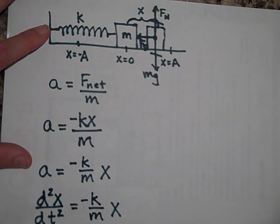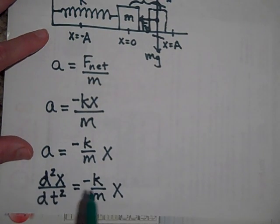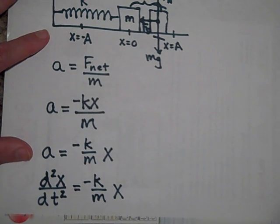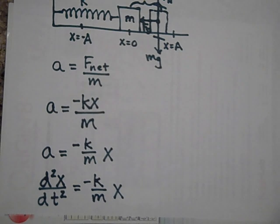Okay, so what function can you think of that when you take its second derivative, you are pretty much back where you started from? So this is equal to that, except for some minor constant. Well, let's go take a look at our equations and see if we can't find that.